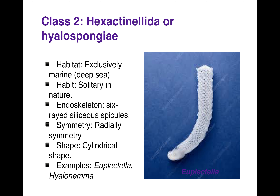Now class 2, Hexactinellida, also known as Hyalospongia. They are exclusively marine and solitary in nature. They have six-rayed siliceous spicules. They are radially symmetrical and cylindrical in shape. Examples are Euplectella and Hyalonema.